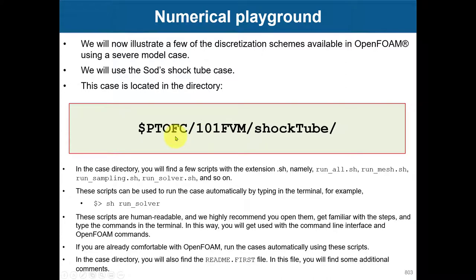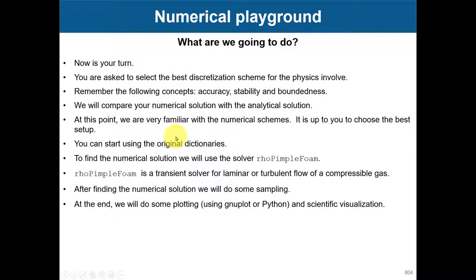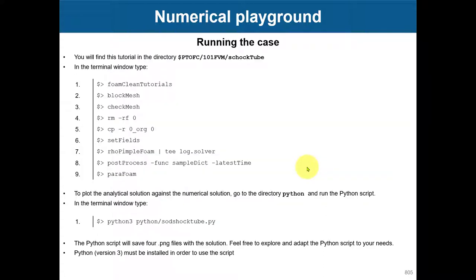You'll find this case in the tutorial directory. The key new thing here is we're going to use a new solver: rawPimpleFoam. Previously we used pimpleFoam and pisoFoam, which are incompressible solvers. Now we move to rawPimpleFoam, which handles compressible flows and high-speed flows. Remember, compressible solvers require absolute pressure values — if you put zero pressure it will diverge because that corresponds to vacuum, which is not physically compatible.